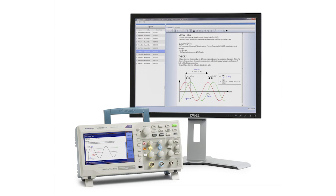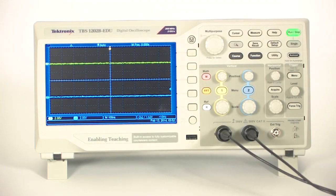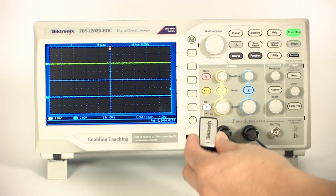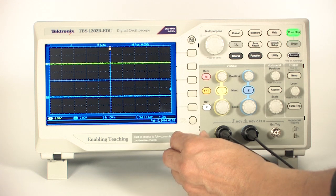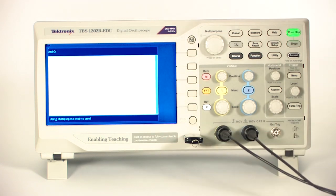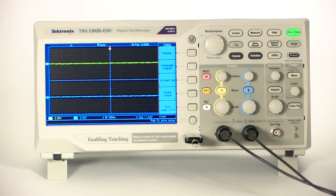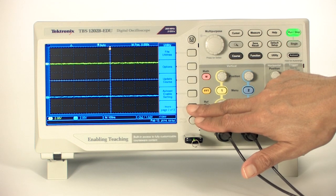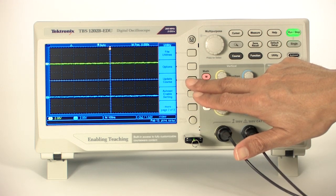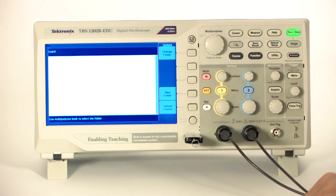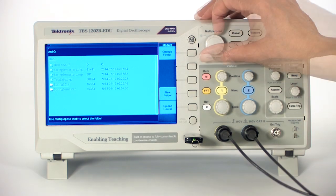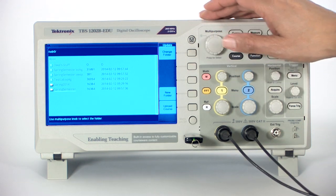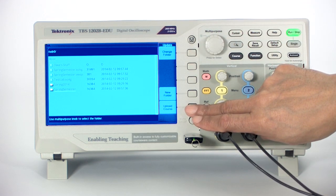The first step is to insert a USB drive that contains a PC editor courseware file into the USB drive located on the front of the oscilloscope. After the drive is verified, press the Front Panel Utility button to access the utility menu. Find the Update Course option and press the corresponding button. Navigate through the USB drive files using the multi-purpose knob to select your XPackage file and then press the Upload Course button.